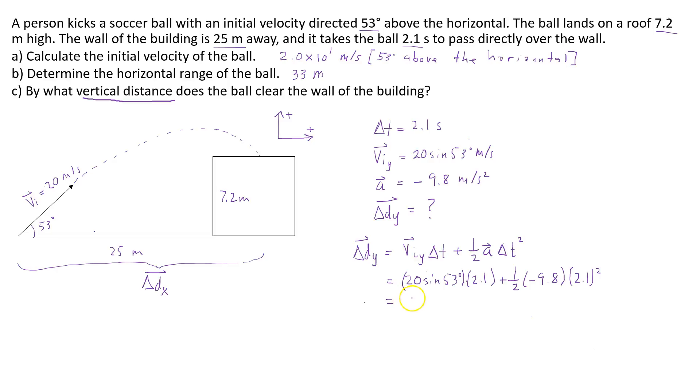Putting that all into a calculator gives us a value of 11.93 meters. To find the vertical distance by which the ball clears the wall, I'm going to take 11.93, the vertical displacement of the ball, subtract the height of the wall, 7.2. And that's going to give me a value of 4.7 meters.